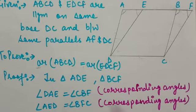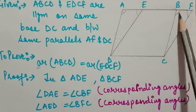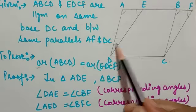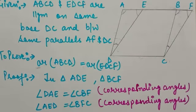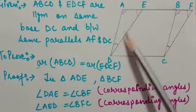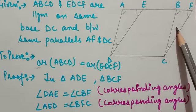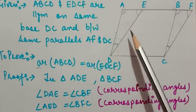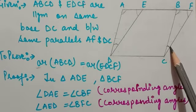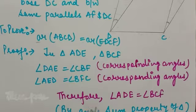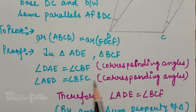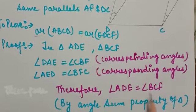In two triangles, if two pairs of angles are equal to the respective corresponding pairs, then the third angle is also equal by the angle sum property — the sum of three angles of a triangle is 180°. So in triangles ADE and BCF: angle DAE = angle CBF, and angle AED = angle BFC as corresponding angles. Therefore, the third angle is also equal by angle sum property.